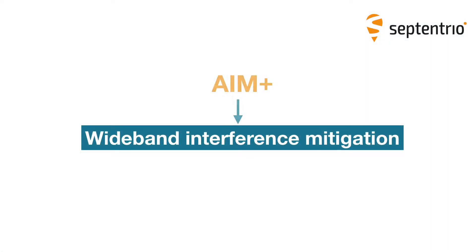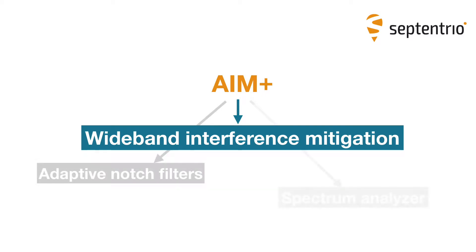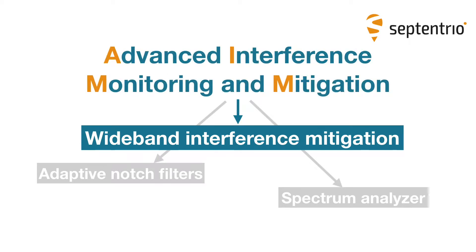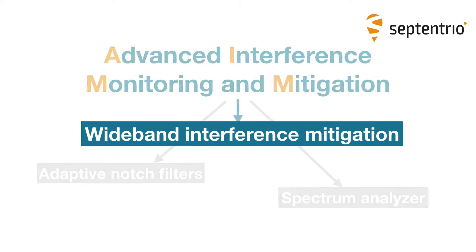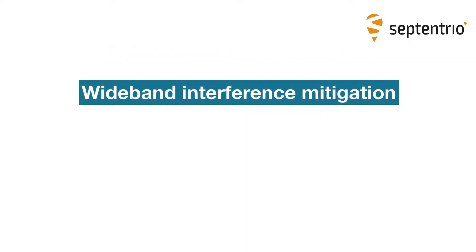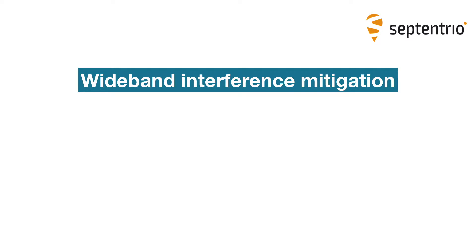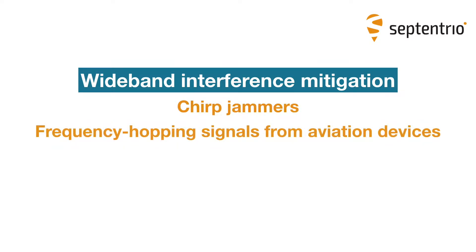Wideband interference mitigation is one of the tools of AIM+, Septentrio's patented advanced interference monitoring and mitigation technology. Wideband interference mitigation can reject complex types of interference, such as that from GNSS chirp jammers, frequency hopping signals from aviation devices, as well as high-powered InMarsat transmitters.